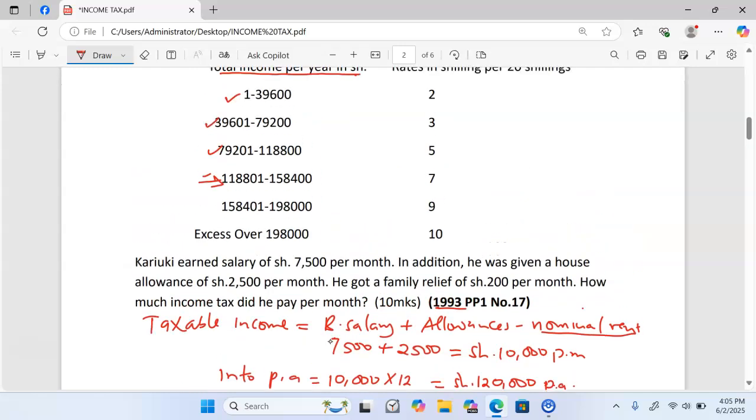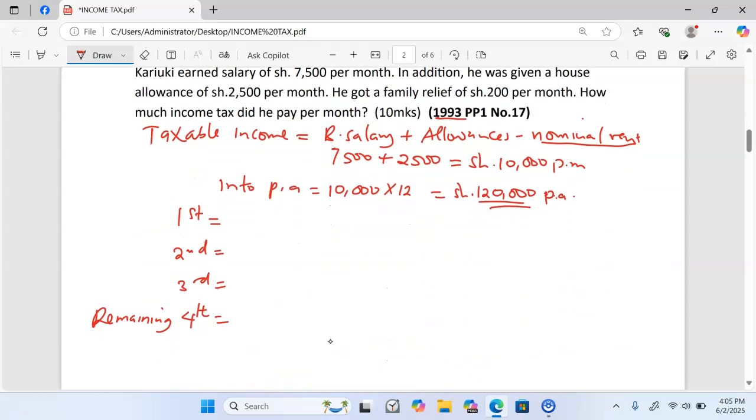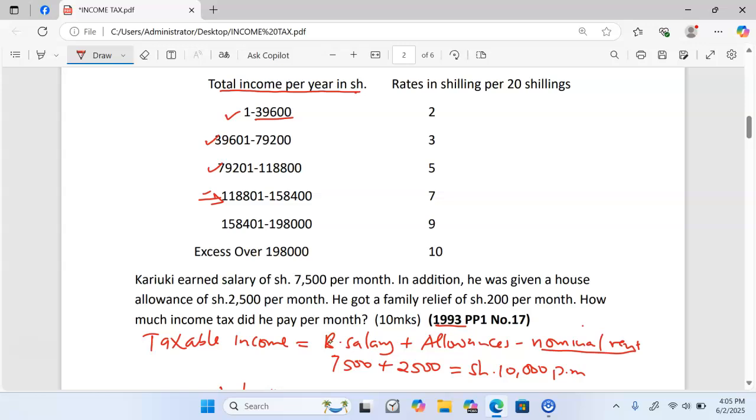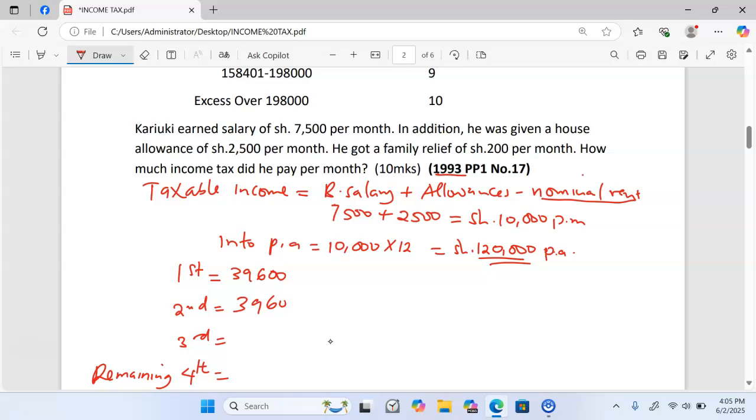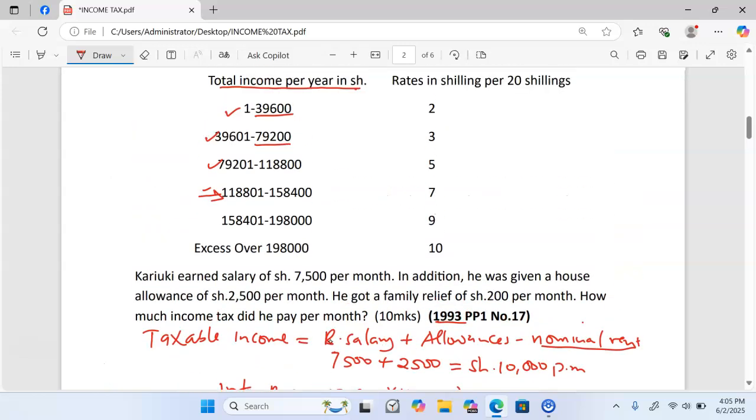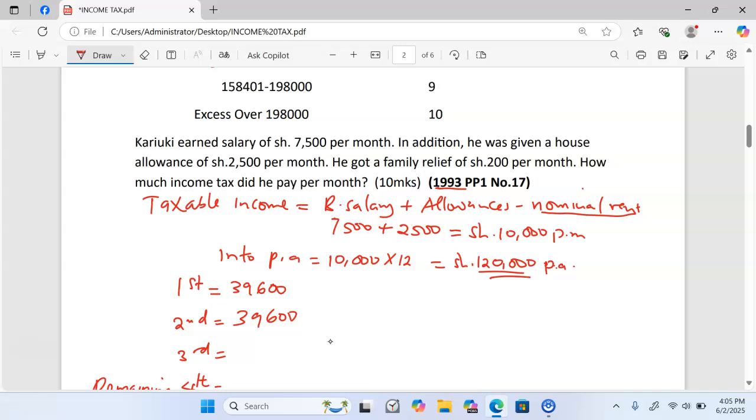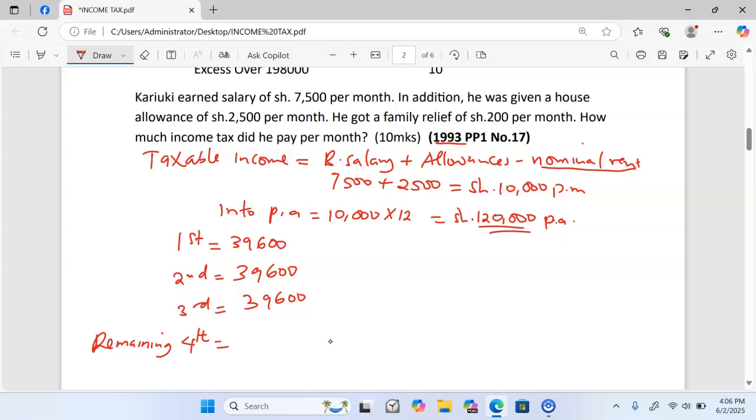In the fourth bracket where our money lies we call it the remaining. We are going to pick the first bracket - usually we tax the maximum. In the first bracket the maximum is 39,600, that is the amount we are going to tax. To know the amount to tax in the second bracket you take the maximum second which is 79,200 minus maximum first which is 39,600. This one will give us 39,600. We go to the third bracket to know the amount to tax: we take maximum third which is 118,800 minus maximum second of 79,200. That again gives us 39,600.